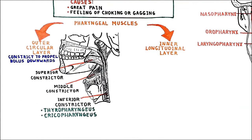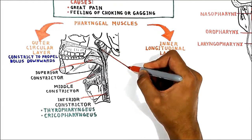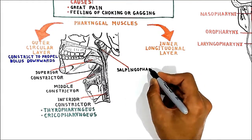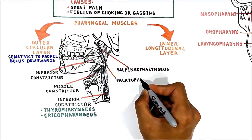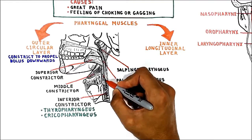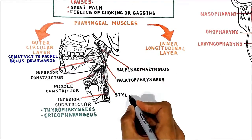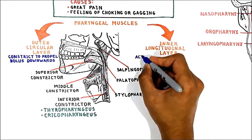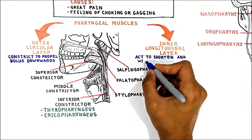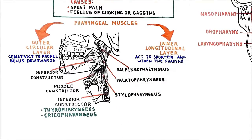The inner longitudinal layer includes salpingopharyngeus, palatopharyngeus, and stylopharyngeus. During swallowing, these muscles act to shorten and widen the pharynx.